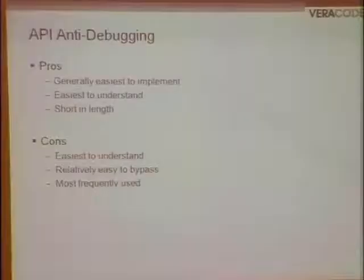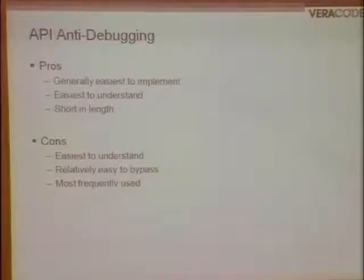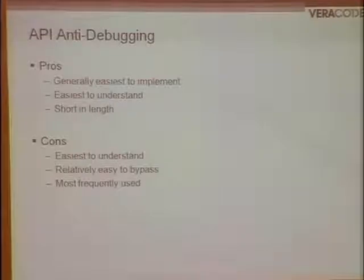Pros and cons of API-based anti-debugging: on the pro side, it's very easy to understand conceptually — one or two calls to documented or undocumented APIs, generally well-understood with available information. They're short. On the con side, bypassing is usually easy due to their trivial complexity, and they're the most frequently used, so most people who would be reversing your programs already know how to bypass these fairly quickly.